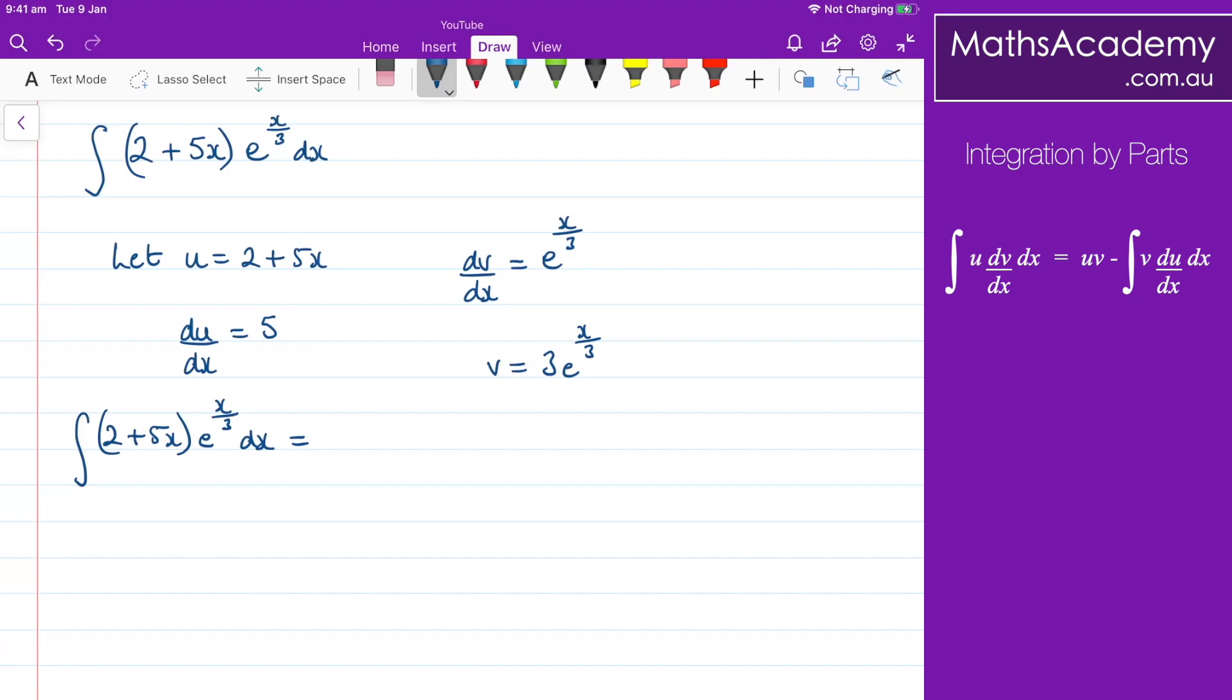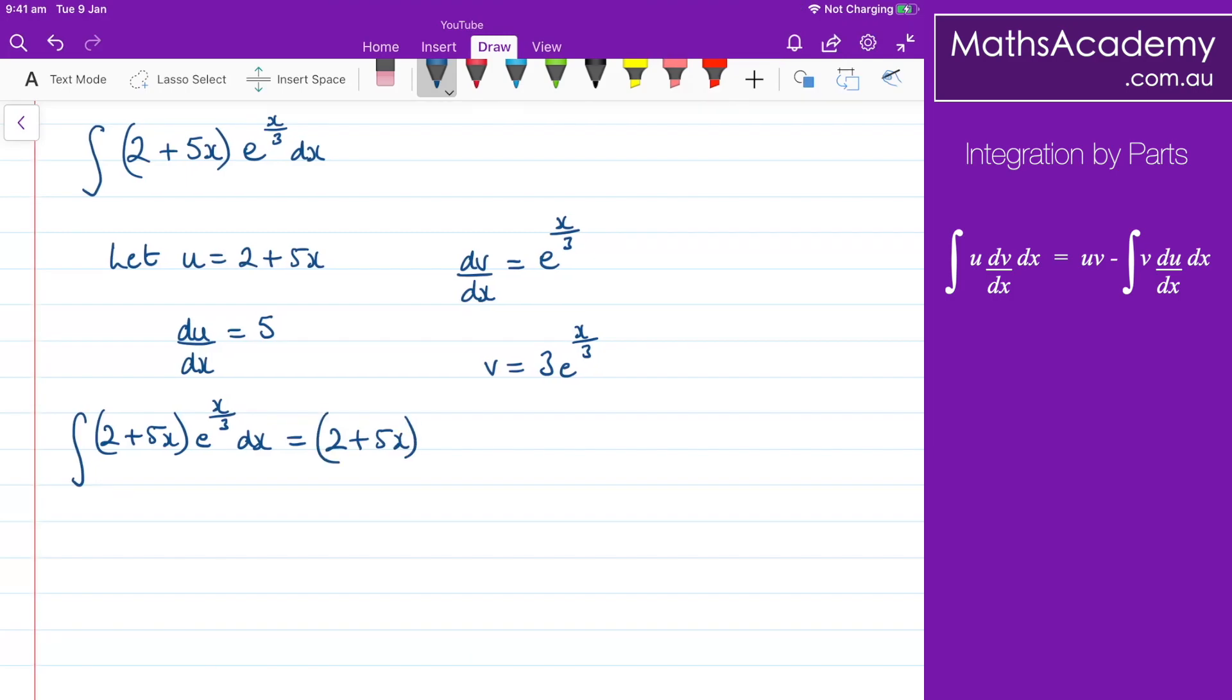And that's going to equal uv, which is (2 plus 5x) multiplied by 3e to the x over 3, minus the integral of v du dx, so that would be 5 multiplied by 3e to the x over 3 with respect to x.